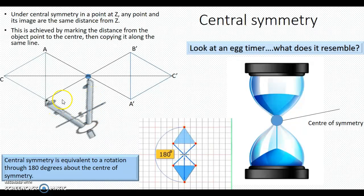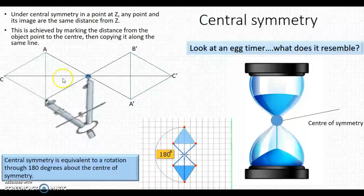As you can see here, by using a compass, point B to the center of symmetry using our compass will achieve the exact same distance to B dash to the center of symmetry. And we do this for each point along each same line.